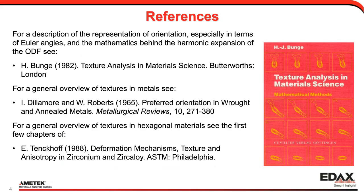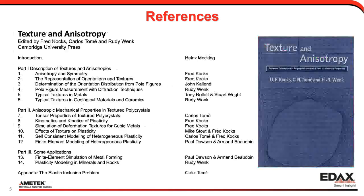As a background, I wanted to give you some references for more details if you want to continue work in this area. The major book in texture analysis is the one by Professor Bunge from 1982 — still probably one of the best books on texture analysis, though it's very detailed and a difficult read, really for somebody who's going to write texture software. For more general overviews, you might look at the classic Dillamore and Roberts, and also one by Wenk, which is particularly good for hexagonal materials. Another reference is one edited by Fred Kocks, Carlos Tomé, and Rudy Wenk — it has chapters on texture, anisotropy, and modeling.